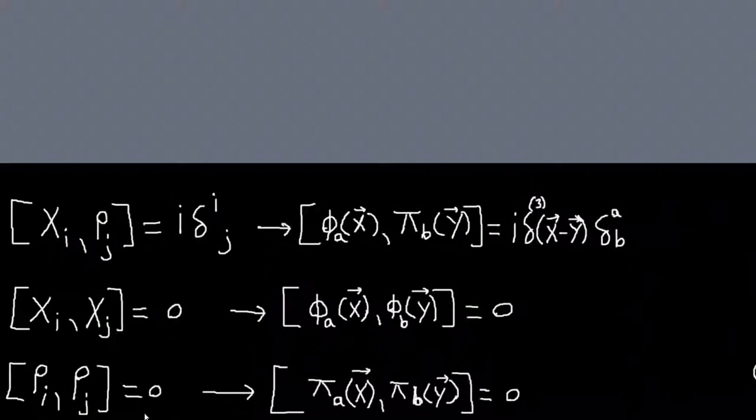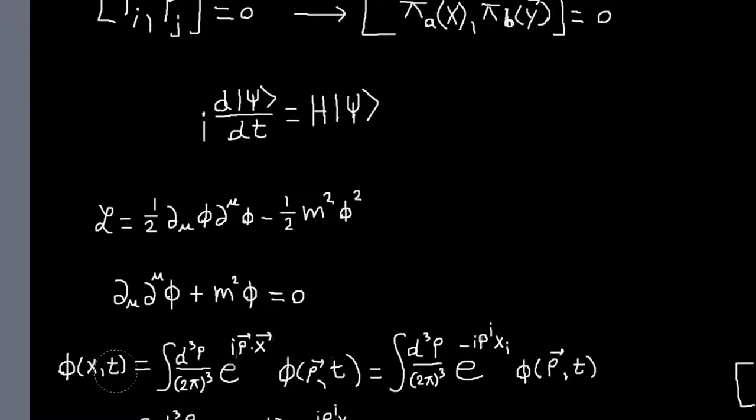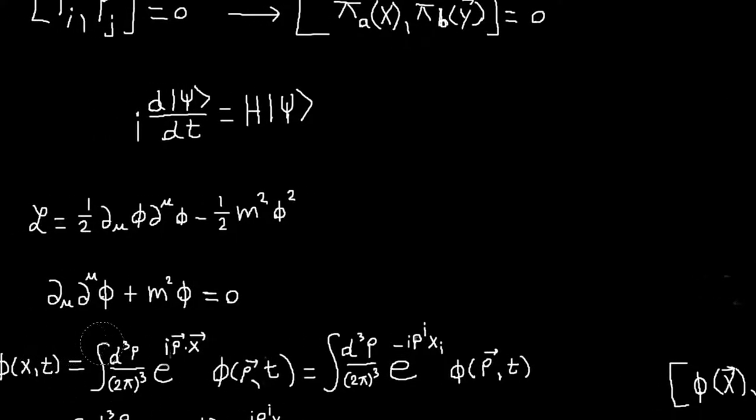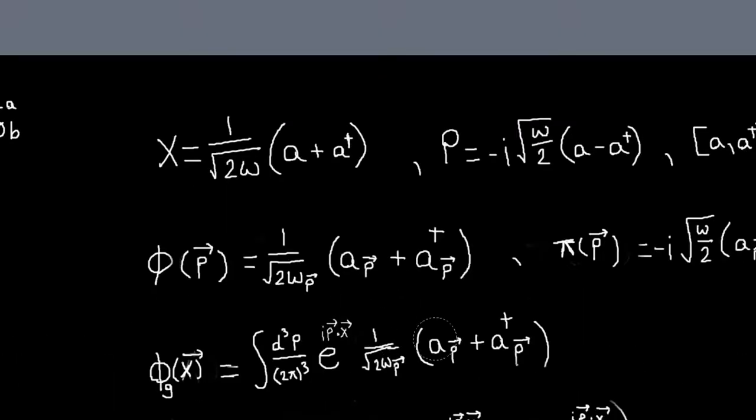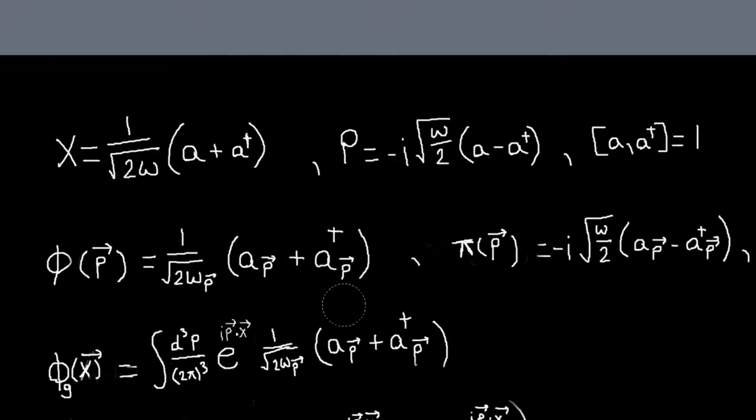And then what we'll do is just take that expression and plug it into an expression for phi(x) that looks like this, and we can plug that expression for phi_p in right here. This has t in it, but since we've gone back to quantum mechanics in the Schrodinger picture, we're just dealing with our spatial coordinates. And if we do that, we will get something that looks like this.